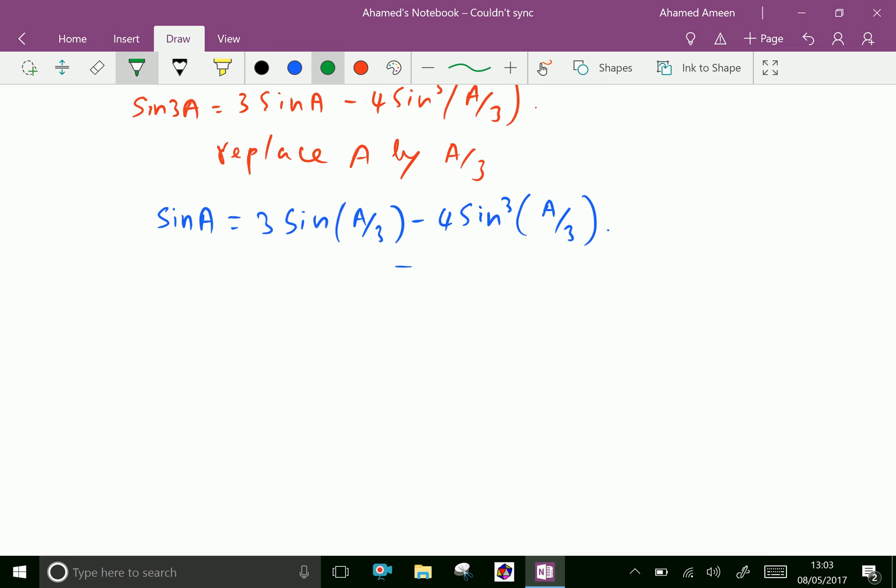cos A equals 4 cos³(A/3) minus 3 cos(A/3). Now...